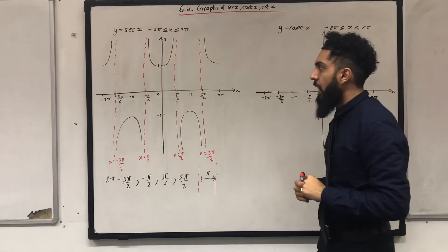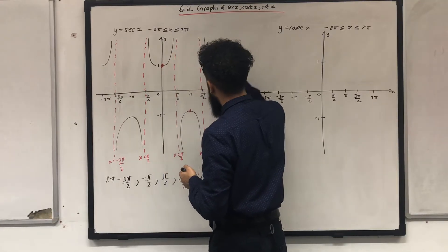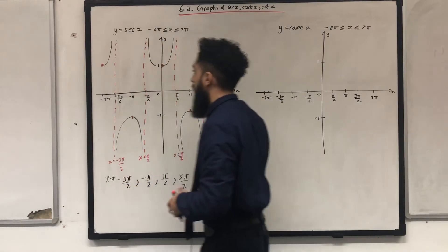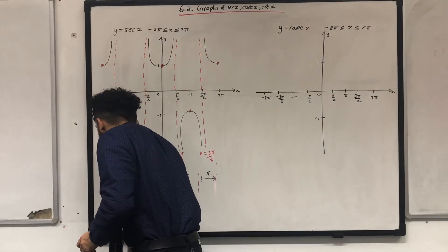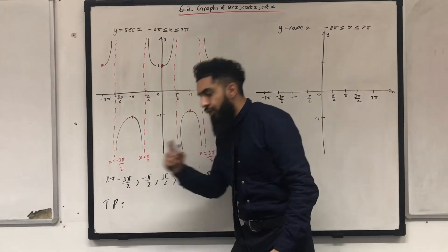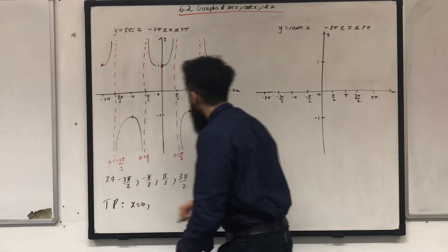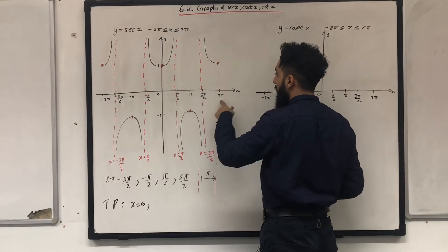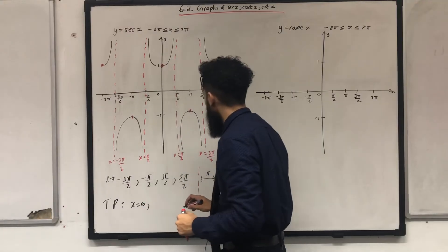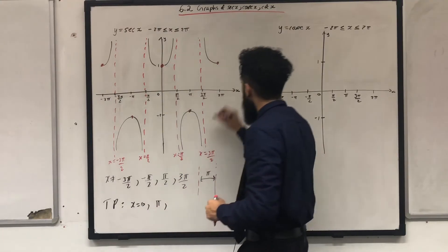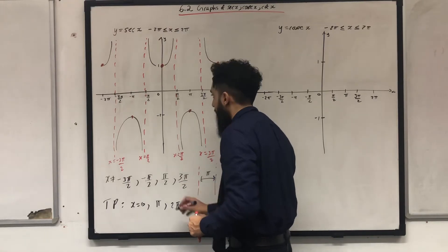The graph also has turning points. The values of x for which y = sec x has a turning point — where 'tp' is shorthand for turning point — are: x = 0, x = π, x = 2π, x = -π, and x = -2π.